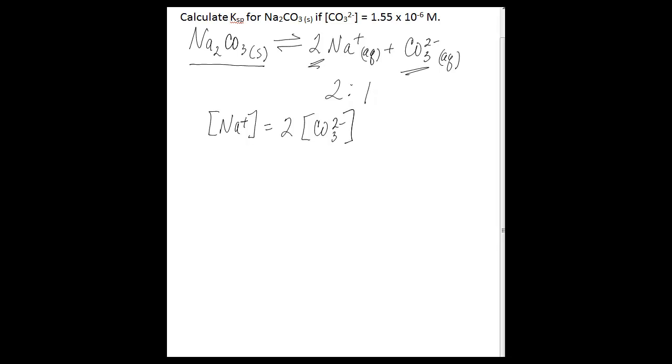So you can figure out the sodium concentration, which you're going to need to calculate Ksp, by substituting the carbonate concentration into this relationship. So you have 2 times 1.55 times 10 to the negative 6 molar, and this is going to give you a sodium ion concentration of 3.10 times 10 to the negative 6 molar.